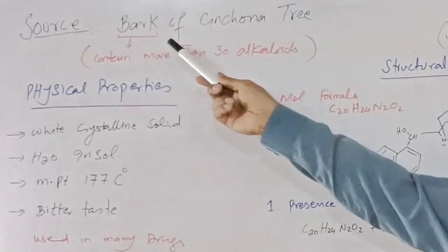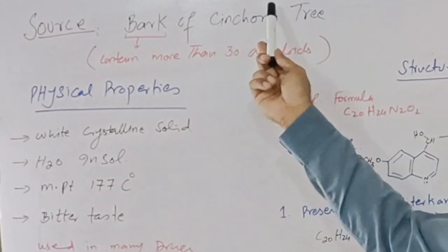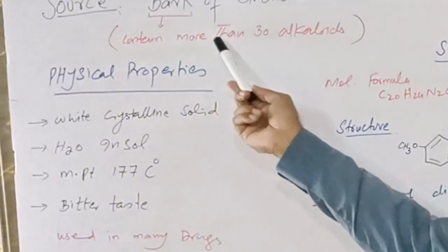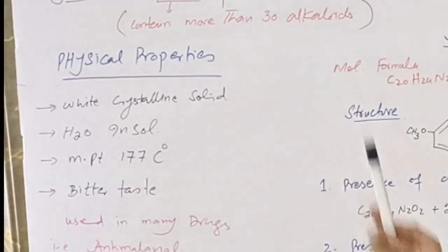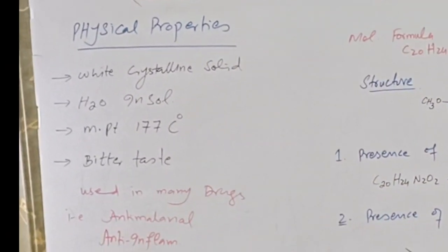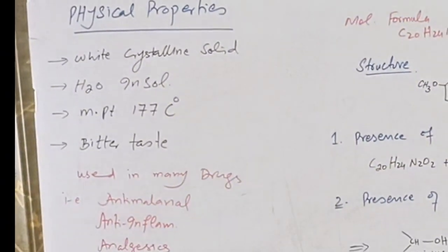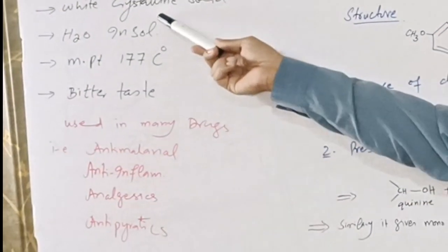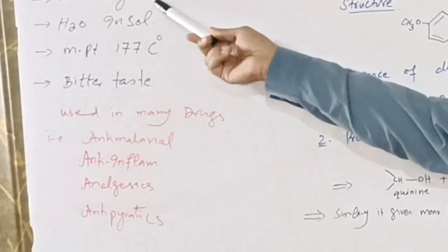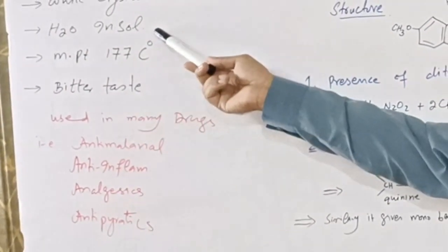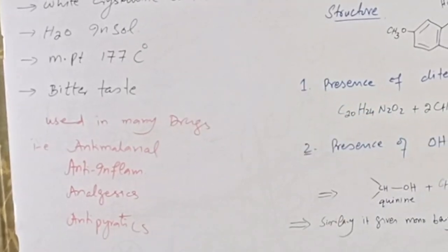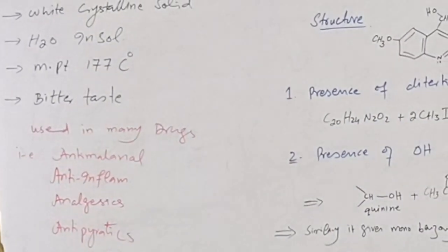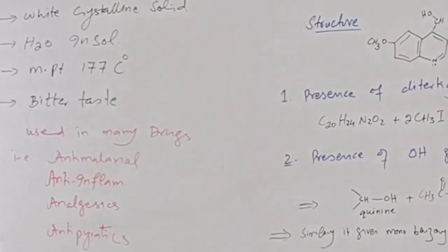It was first isolated from the bark of cinchona, and the bark of this tree contains more than 30 alkaloids. I will discuss a few of its physical properties. It is a white crystalline solid, water insoluble, with a melting point of 177 degrees, and it has a bitter taste.